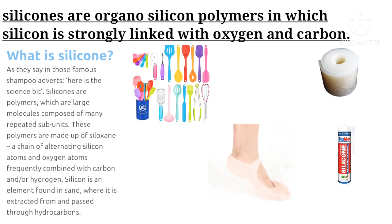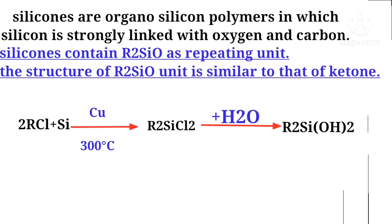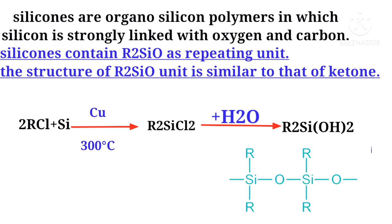Silicones contain R2SiO as a repeating unit. The structure of the R2SiO unit is similar to that of a ketone. They are prepared from alkyl chlorides reacted with silicon, passed through a copper tube at a high temperature of 300 degrees centigrade, forming R2SiCl2, which are organochlorosilanes.